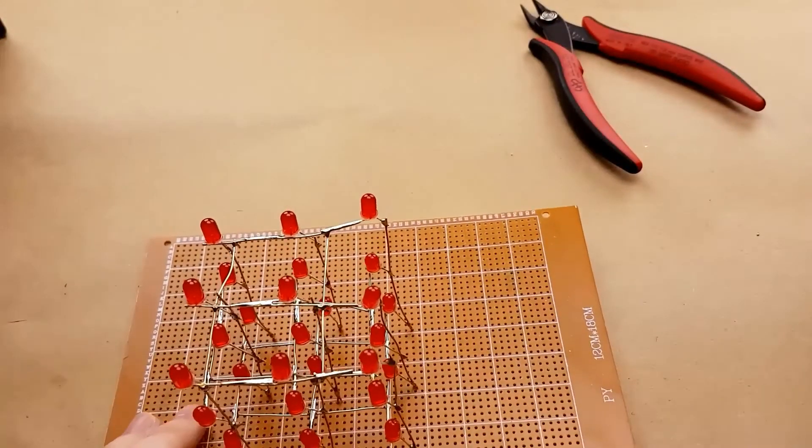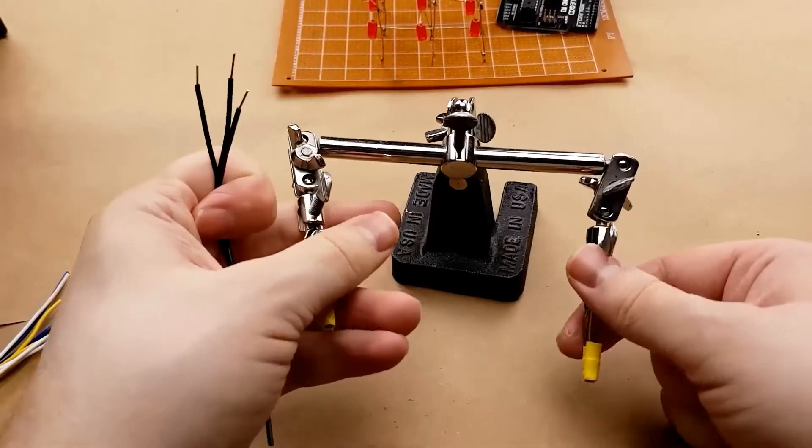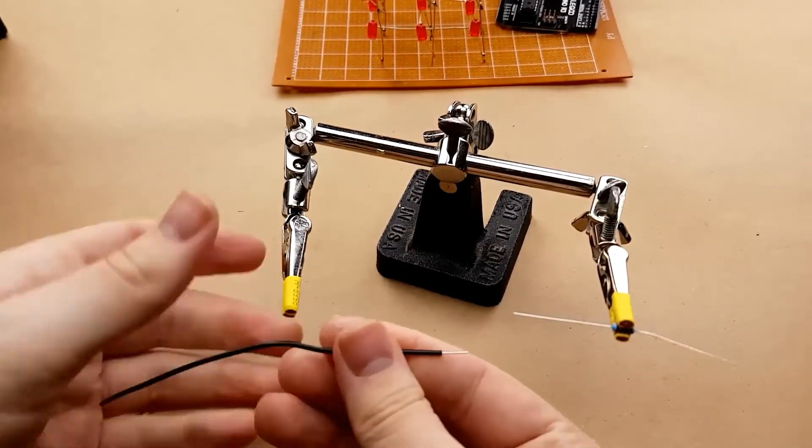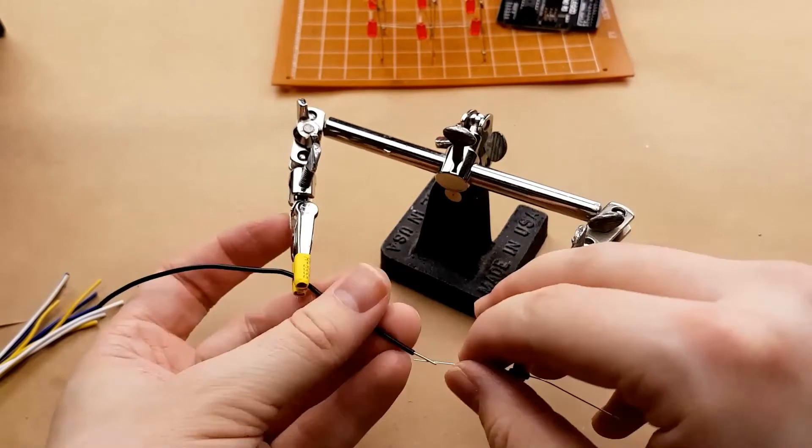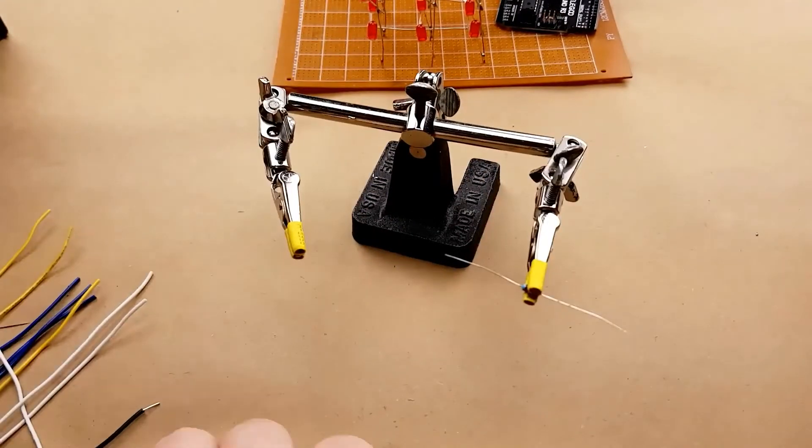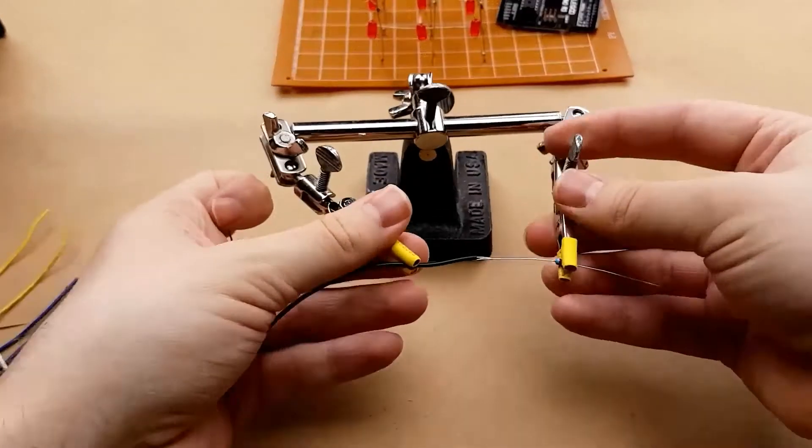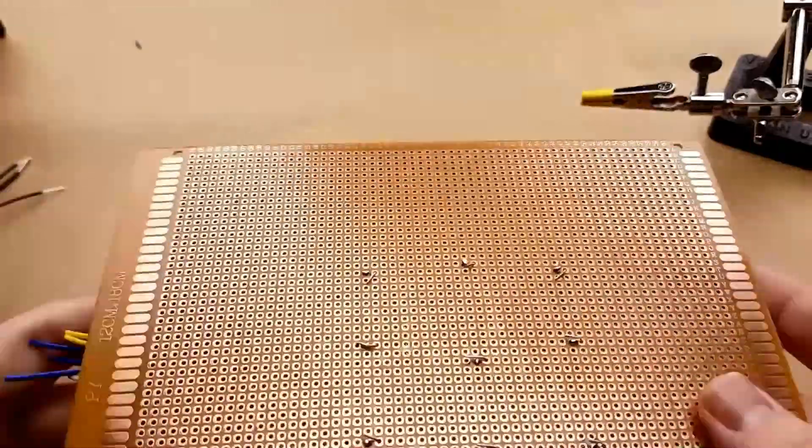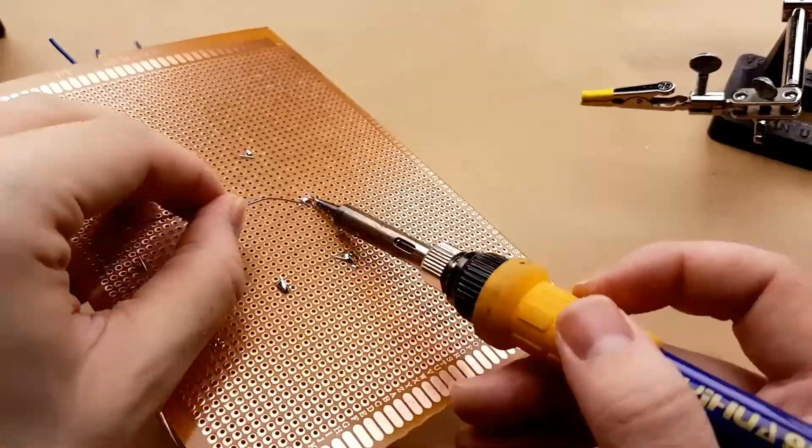So now what we have to do is we have to run a cable to each of these which will then go into all of the different points on the Arduino. Grab the resistor, grab the wire, and solder them together.